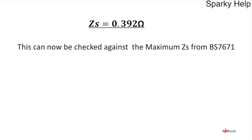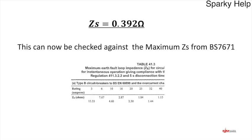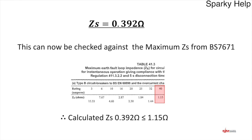Adding ZE gives ZS = 0.25 + 0.142 = 0.392 ohms — the worst case scenario at operating temperature. This is checked against BS 7671 Table 41.3 for our 40 amp Type B circuit breaker, which gives a maximum ZS of 1.15 ohms. Our calculated value of 0.392 is less than 1.15 ohms, so our 6mm CPC is perfectly adequate.